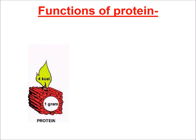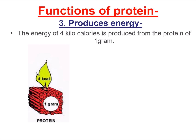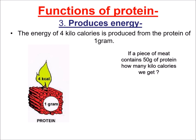When we burn 1 gram of protein, we get 4 kilocalories — meaning protein has the capability to produce energy. Let's do a math problem: if a piece of meat contains 50 grams of protein, how many kilocalories do we get? Since 1 gram of protein has 4 kilocalories, 50 grams of protein equals 200 kilocalories.